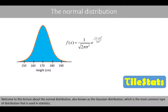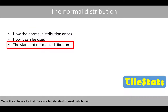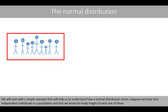Welcome to this lecture about the normal distribution, also known as the Gaussian distribution, which is the most common type of distribution used in statistics. In this video, we'll look at how the normal distribution arises and how it can be used to predict a fraction of people in a population that are taller or shorter than a certain value. We'll also look at the so-called standard normal distribution. We'll start with a simple example that will help us understand how a normal distribution arises.